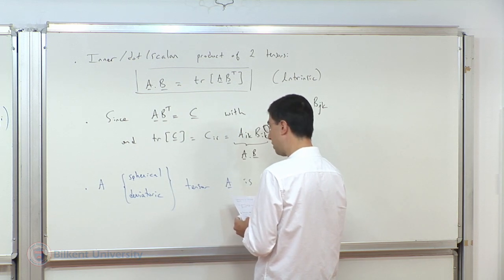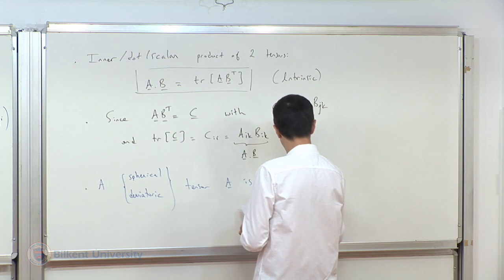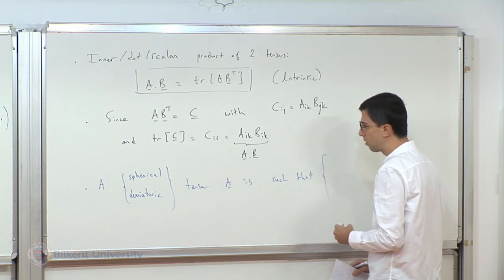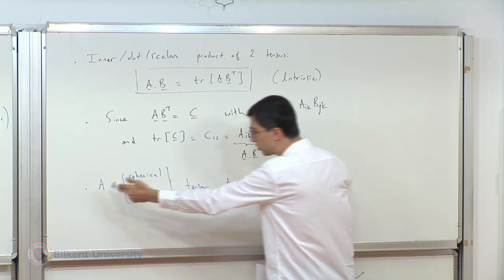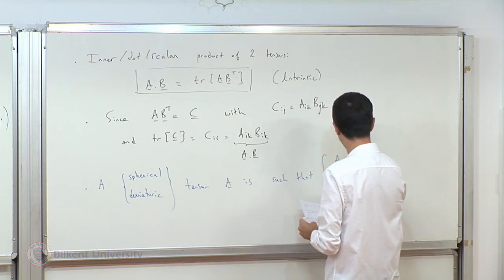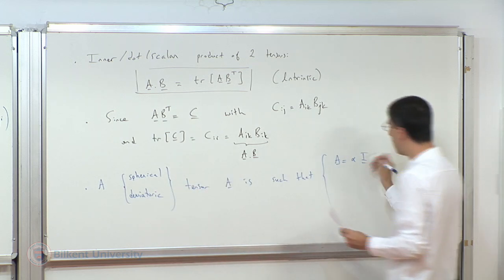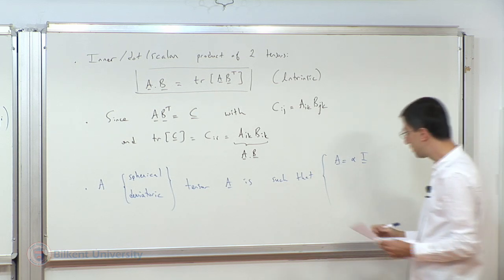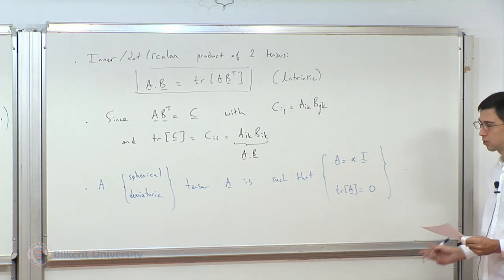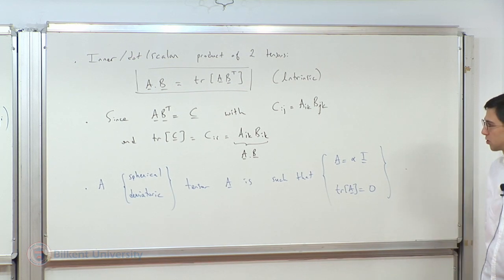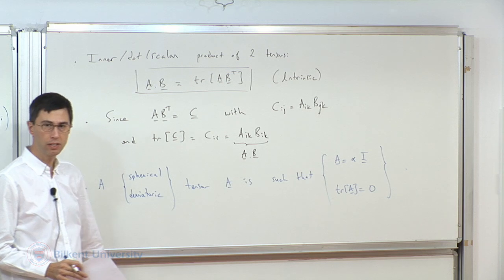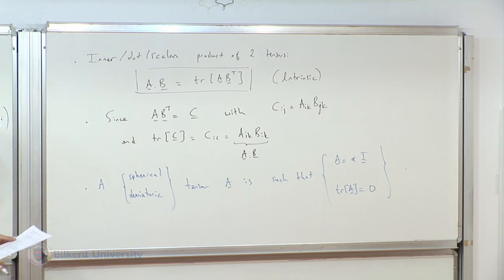A tensor is spherical if it is of the form alpha times the identity, where alpha is a scalar. It is deviatoric if it has zero trace. These are just definitions. Obviously you cannot have both at the same time unless alpha equals zero.